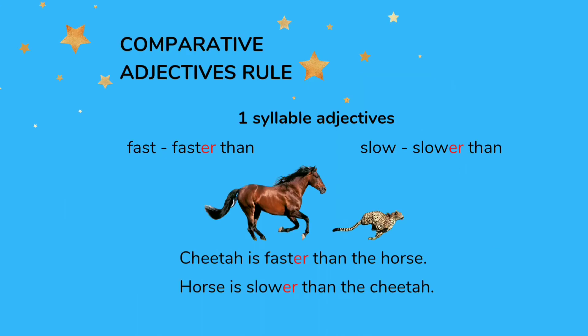There are rules for forming comparative adjectives. For one-syllable adjectives — words that have one sound — we add -er at the end. For example, fast becomes faster than: a cheetah is faster than a horse. The word slow also has one syllable: slow becomes slower than — a horse is slower than a cheetah.